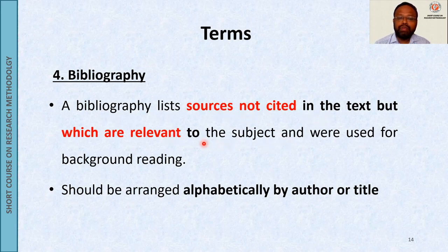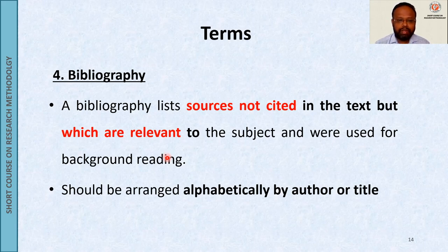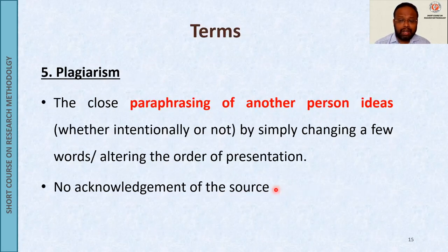So now you have understood what is meant by referencing, citation, reference list, and bibliography. Bibliography should be arranged alphabetically by author or title. The last important term in relation to referencing is plagiarism.